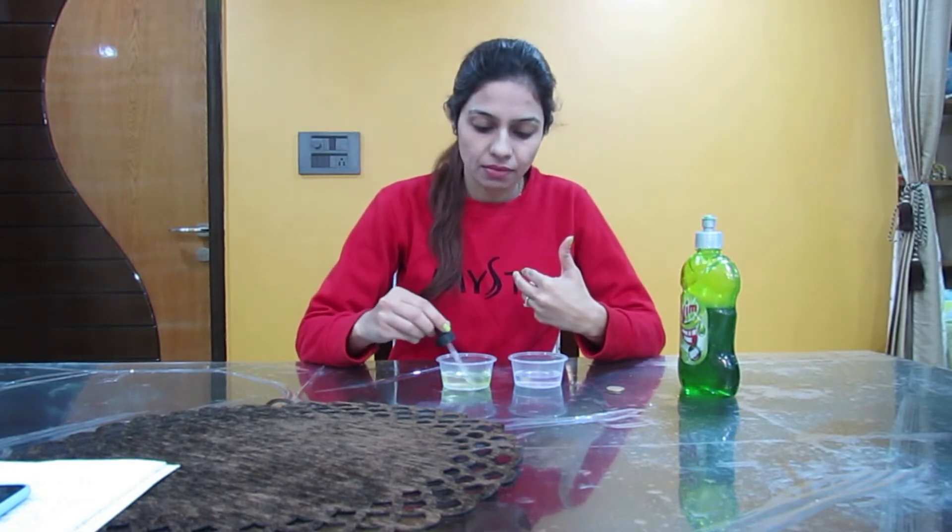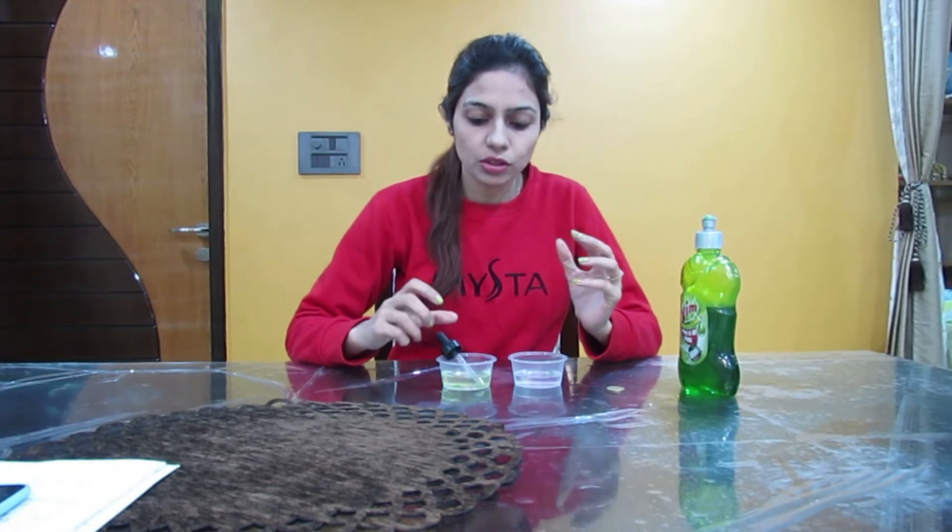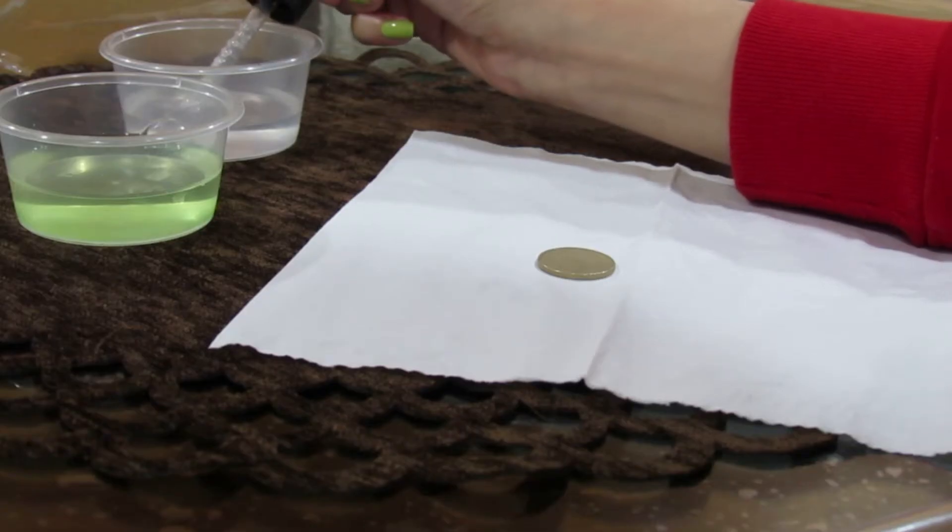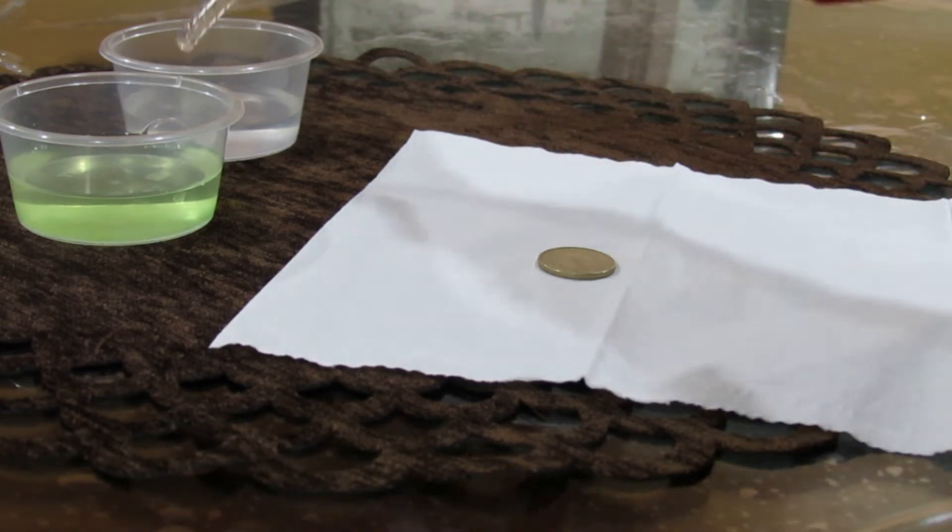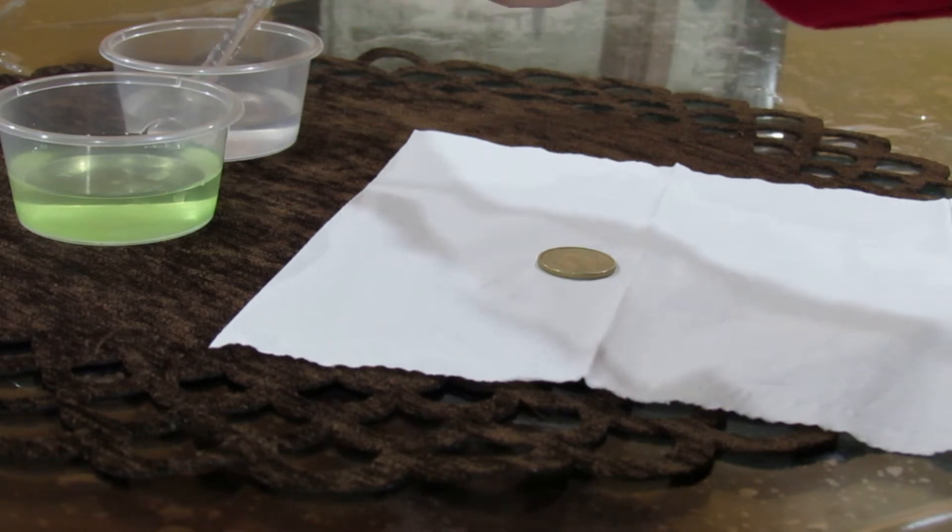Now what we have to do is drop the water onto a coin, and we will observe how many drops we can put on top of the coin. So let's start the experiment. Take the water into a dropper and start dropping it on the coin.